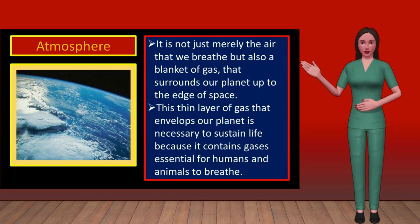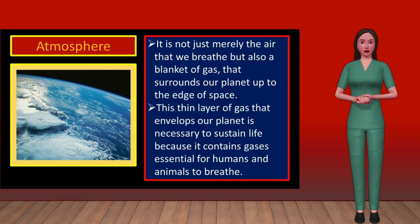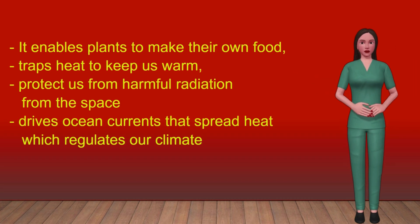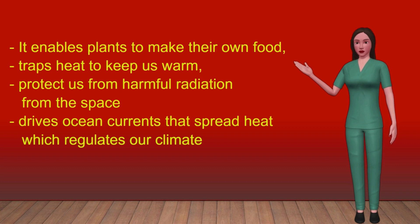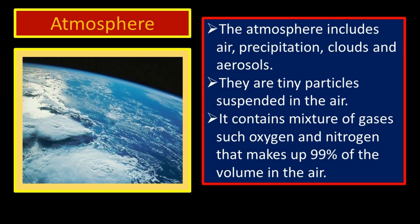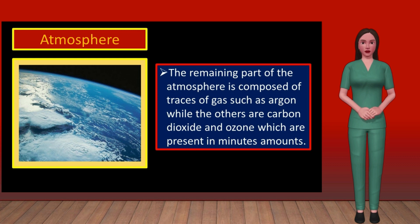Third, the atmosphere. The Earth's atmosphere is not just merely the air that we breathe, but also a blanket of gas that surrounds our planet up to the edge of space. This thin layer of gas is necessary to sustain life because it contains gases essential for humans and animals to breathe, enables plants to make their own food, traps heat to keep us warm, protects us from harmful radiation from space, and drives ocean currents that regulate our climate. The greenhouse gases help keep our planet's temperature at a level conducive to life. The atmosphere includes air, precipitation, clouds and aerosols — tiny particles suspended in the air. It contains a mixture of gases such as oxygen and nitrogen that make up 99% of the volume of air, with trace gases such as argon, carbon dioxide and ozone present in minute amounts.